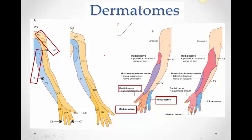Let's begin with dermatomes. At the shoulder it's C4 and C5 — remember when we discussed how irritation of the phrenic nerve gives referred pain at the shoulder. The cervical dermatomes are present on the lateral aspect of the upper limb, while thoracic dermatomes are present on the medial aspect. T2 and T1 are particularly important: the T2 intercostal nerve gives a large lateral cutaneous branch which comes into the medial side of the arm. That's why referred pain from heart problems goes to the medial side of the arm.